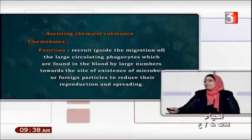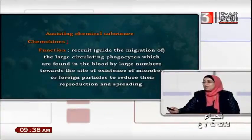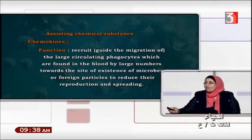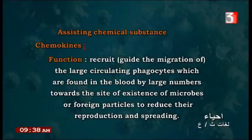What is chemokinase? Its function is to recruit, guide, or cause migration of the large circulating phagocytes found in blood in large numbers towards the site of existence of microbes or foreign particles, to reduce their function or reduce their reproduction and spreading.